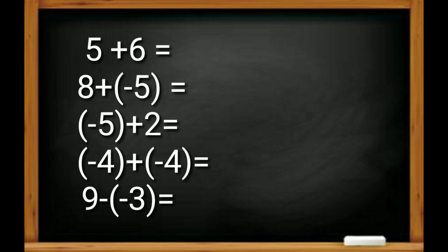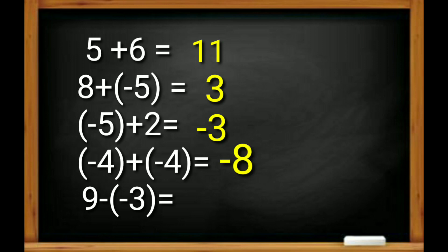5 plus 6 equals 11. 8 plus minus 5 equals 3. Minus 5 plus 2 equals minus 3. Why the minus sign here? Because the sign of the bigger number is minus. Minus 4 plus minus 4 is equal to minus 8. 9 minus minus 3 equals 12.